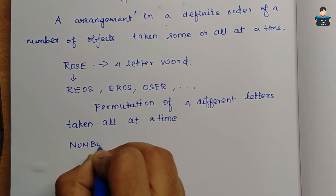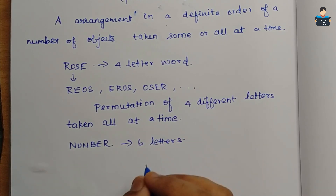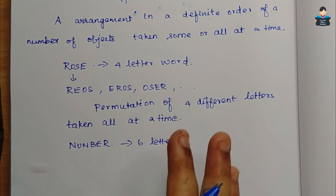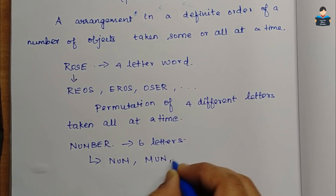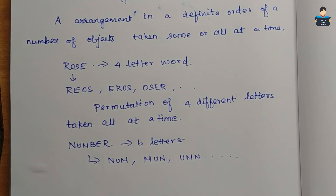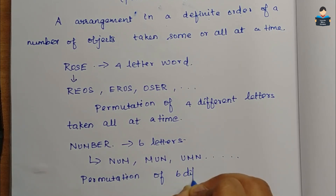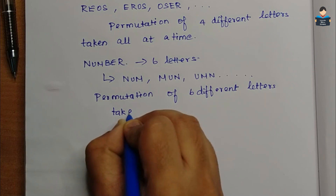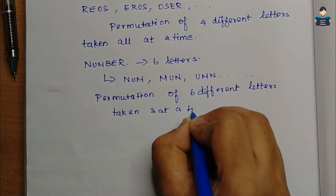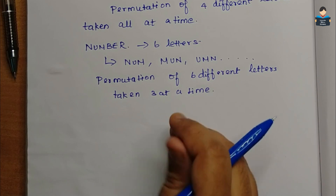The word 'NUMBER' has six letters. There are six letters, and we arrange any three letters. Say for example N-U-M, M-U-N, U-M-N — different arrangements. So each arrangement we will say permutation of six different letters taken three at a time. Permutation of six different letters taken three at a time — so this is right.